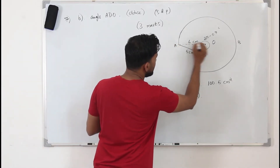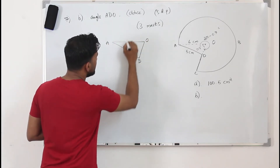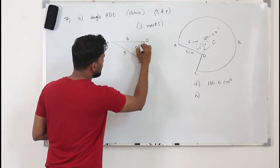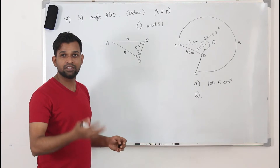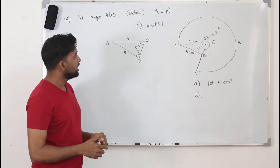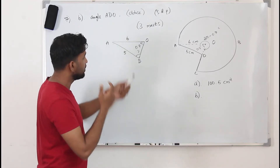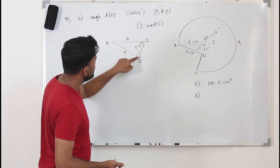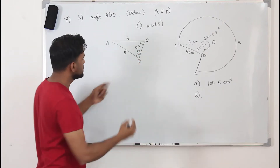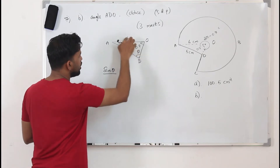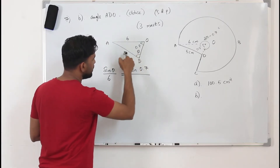Let's consider triangle ADO. We have OA = 6 cm, AD = 5 cm, and the angle at O is 0.7 radians. We need to find angle ADO. We have two angles and two opposite sides, so we can use the sine rule. The sine rule gives us: sine theta divided by the opposite side 6, equals sine 0.7 radian divided by 5.